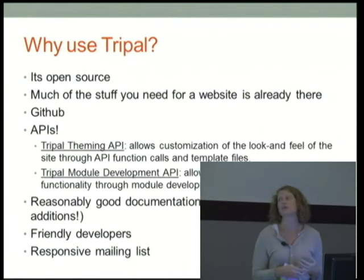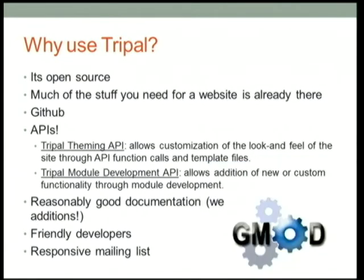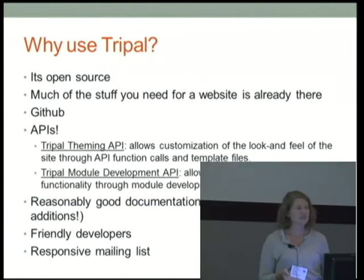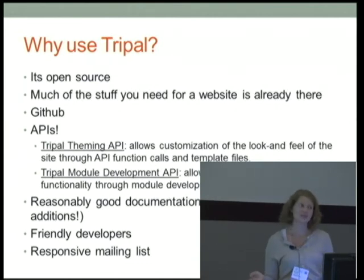So why would you use Tripal? It's open source and most of the stuff you need for a website is already there, so you can get started a lot faster than starting from scratch. It is on GitHub and we now have APIs, which are pretty new but very exciting because they make all of the modules work together a whole lot better. We have reasonably good documentation, a friendly developer group, and a very responsive mailing list. We are also a member of the GMOD consortium, and at GMOD conferences there will usually be tutorials on installing and using Tripal, and maybe on becoming a developer.